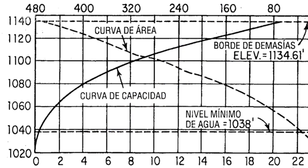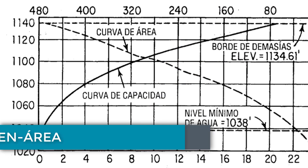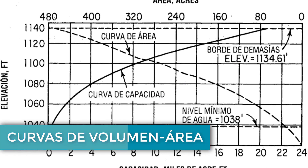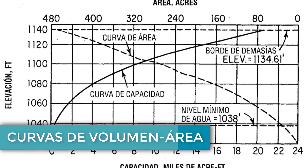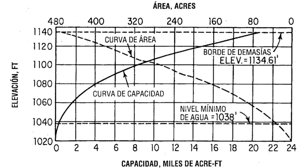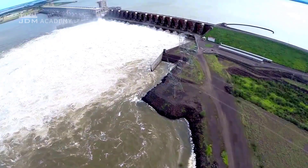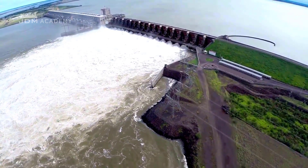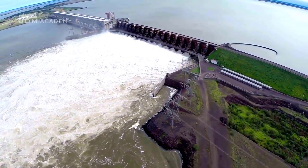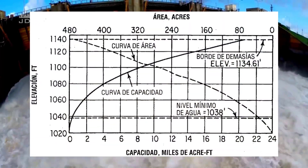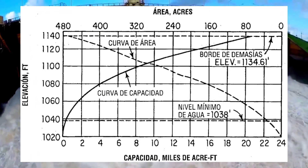Once the reservoir site is selected, the volume-area curves are plotted to obtain the site characteristics. The volume-versus-water-elevation plot is determined by planimetry of the area from selected contour lines within the reservoir site, multiplied by the interval between contour lines.